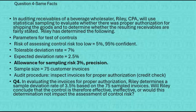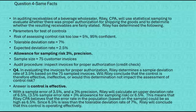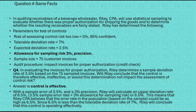You always hope to end up where the maximum error rate — 6.5% — is below the error rate you can tolerate. The answer to question four is that the control is effective, because with a sample error rate of 3.5% and a 3% precision, Riley calculates an upper deviation rate of 6.5%. Since 6.5% is less than the tolerable error rate of 7%, Riley concludes that this control is operating effectively.